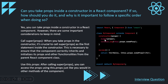After calling super(props), you can access props using this.props, just as you would in any other method of the component. For example, you can write console.log(this.props.someProp) to access a prop value. In the code example, the constructor is defined with props, super(props) is called first, and then this.props is used.